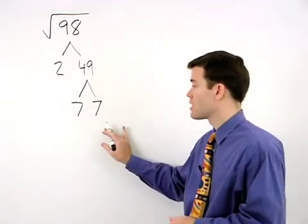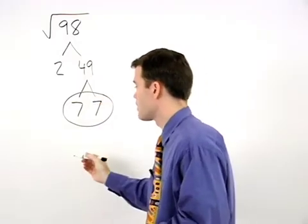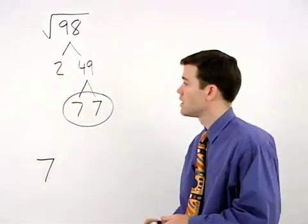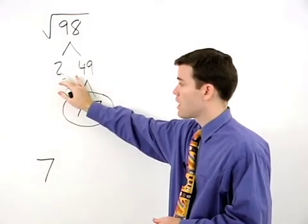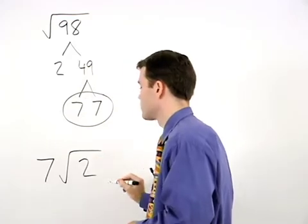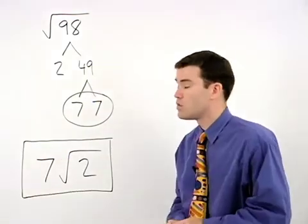So here, since our 7's pair up, a 7 will come out of the radical. Since the 2 does not pair up, it stays inside the radical. And our answer is 7 root 2.